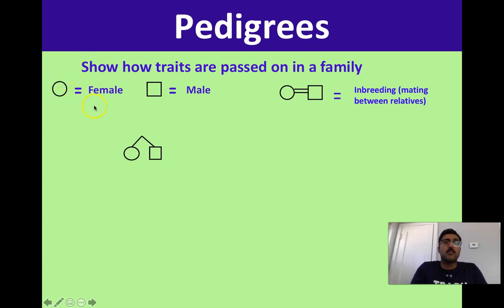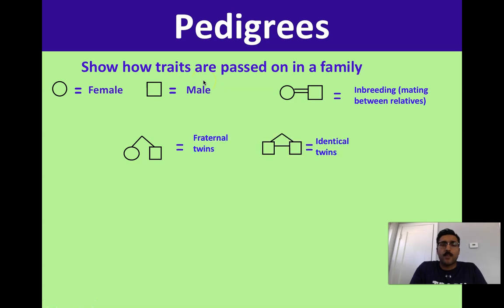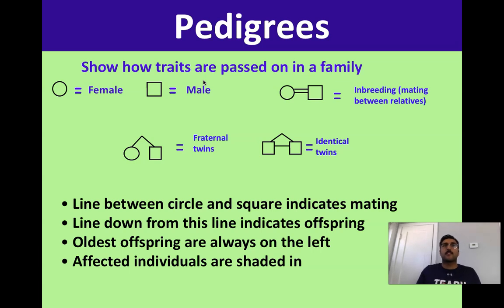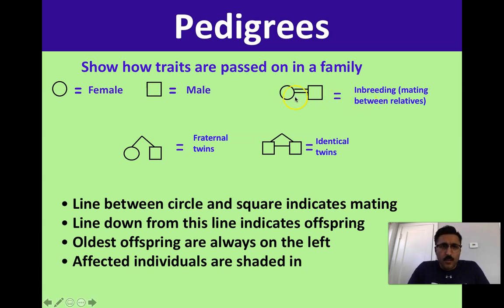With a pedigree we have certain symbols. An open circle represents a female; an open square represents a male. Any time you have a symbol that is shaded in, that shaded symbol refers to somebody who is affected by a trait — they express the trait in question. 'Affected' doesn't necessarily mean they have a disease; it just means they show the trait. For example, if we're following blonde hair, a shaded symbol means they express that phenotype.